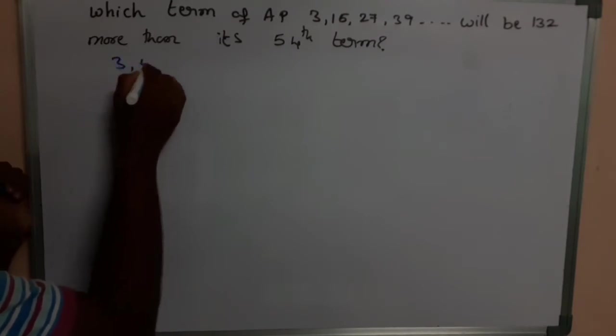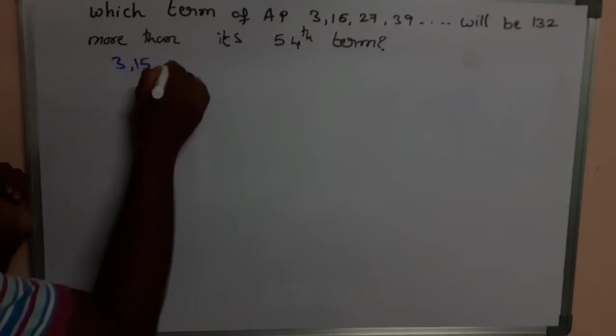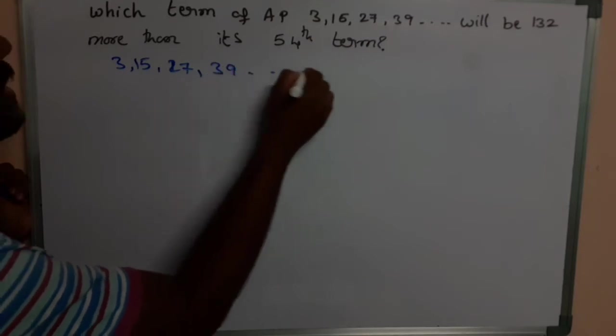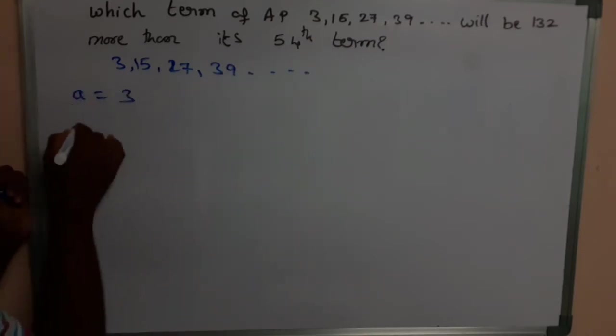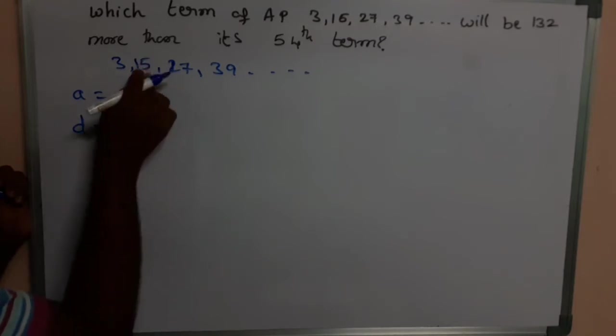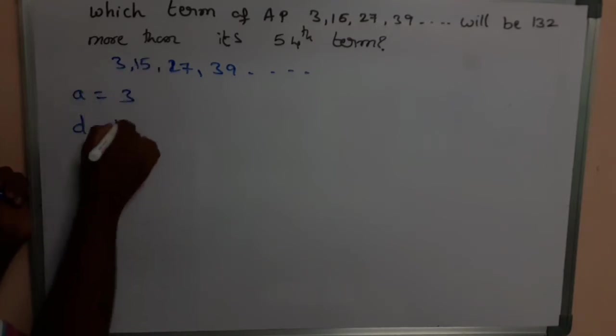The given AP: we have 3, 15, 27, 39, and so on, in which the first term a is 3 and the common difference is T2 minus T1, that means 15 minus 3, that is 12. The common difference we got as 12.